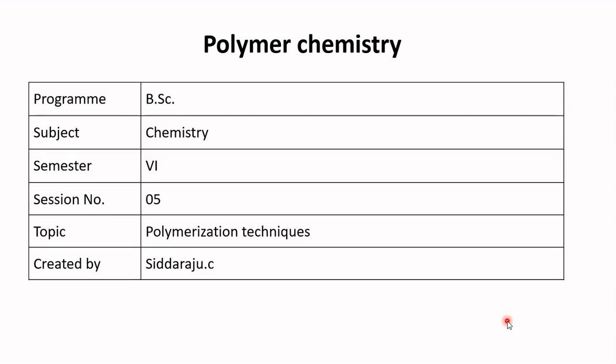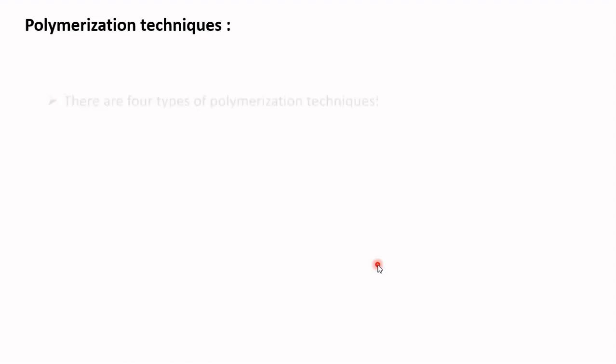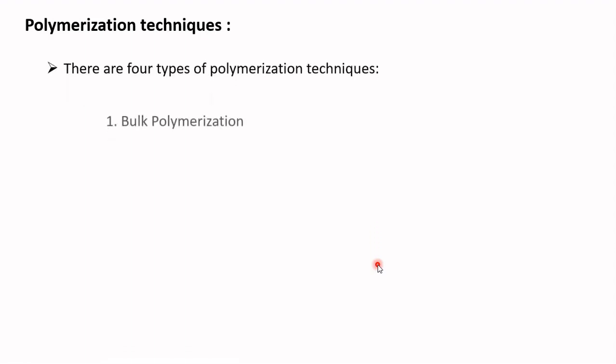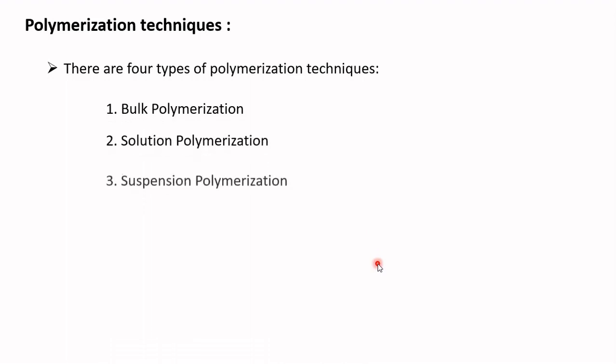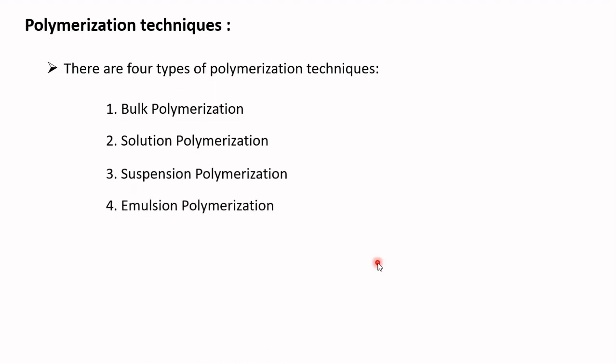In this session, we will discuss polymerization techniques. Polymerization techniques are methods used to polymerize a particular monomer. There are four types of polymerization techniques: bulk polymerization, solution polymerization, suspension polymerization, and emulsion polymerization.